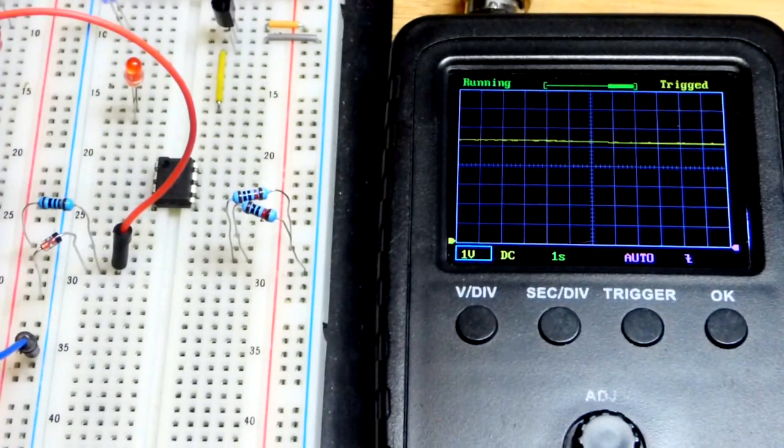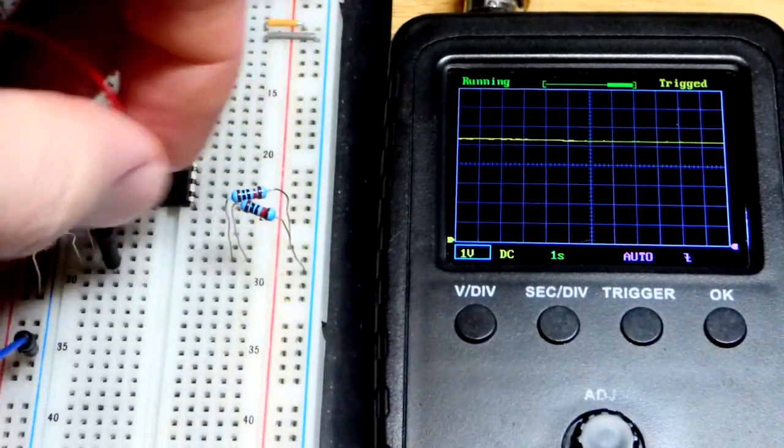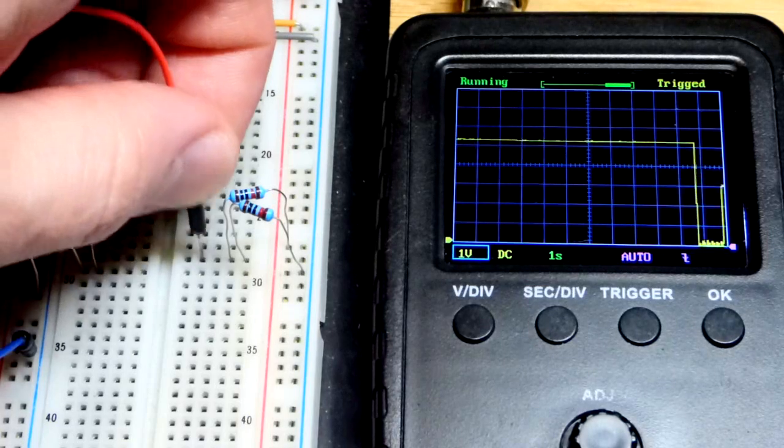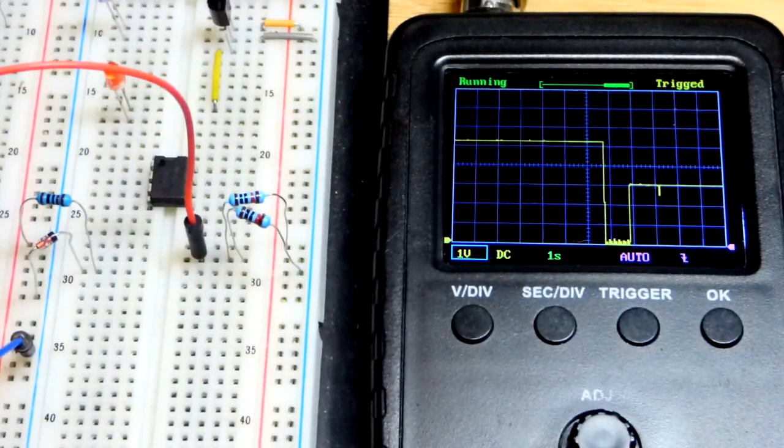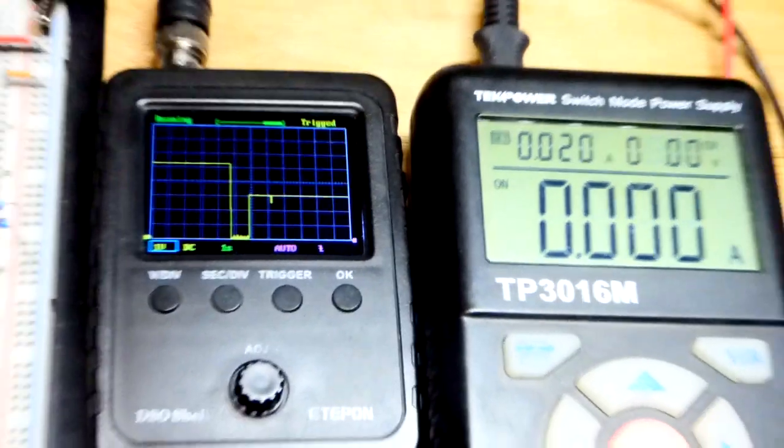And what we're going to do is come back to the board. I have my two 10 kilo ohm resistors there. So they don't have to be 10 kilo ohms. They just have to be equal value if you want half the supply voltage. So now we got 3 volts from a 6 volt supply right there.